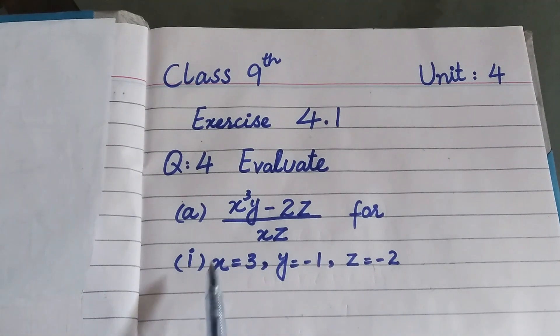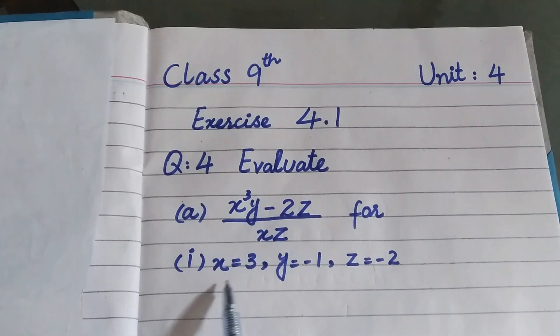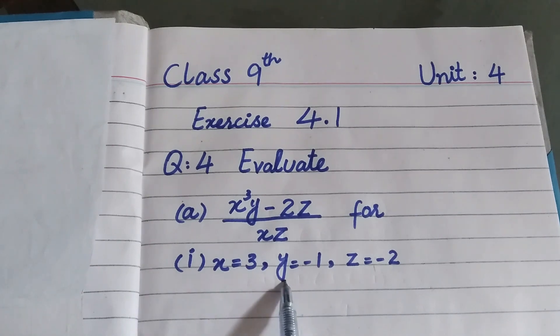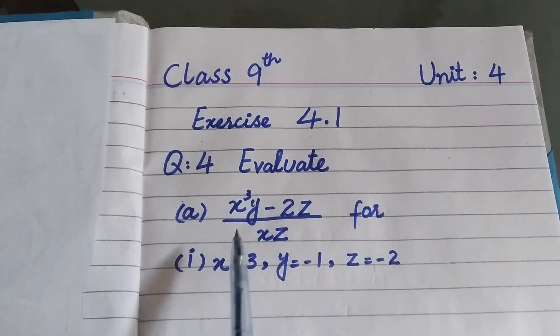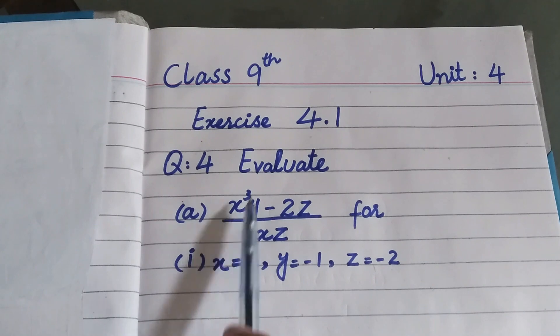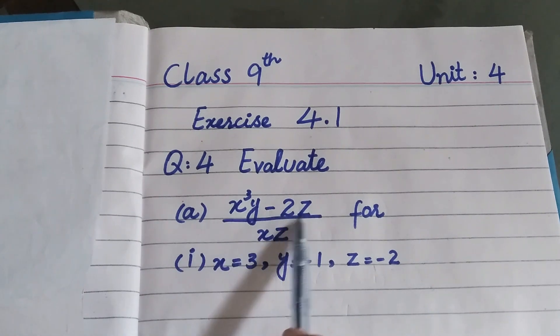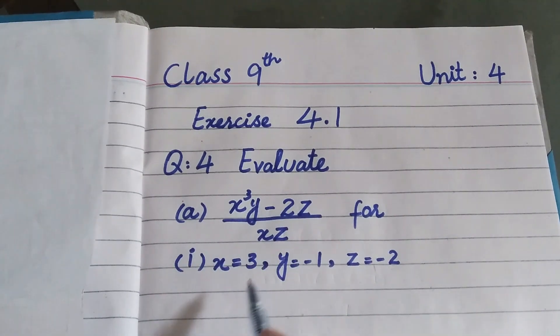Now, what do we do? We give the values: x equal to 3, y equal to minus 1, and z equal to minus 2. And we put them into x cubed y minus 2z over xz.